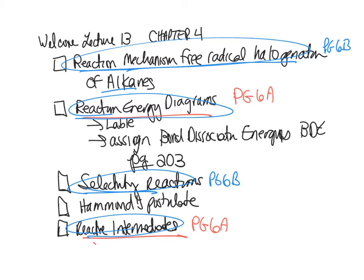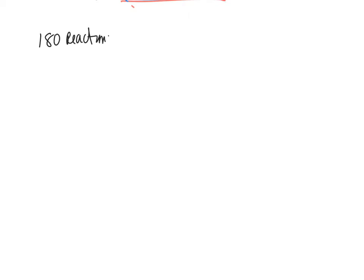If you're planning on taking Organic 2, you're going to be learning about 180 reactions and you'll have to know them all by the time you take your final for Organic 2. That's why it's very important that you learn how to draw Lewis structures — that Pogel 1 activity and Pogel 2 where we talked about resonance structures — and get used to those first two rows of the periodic table: carbon, nitrogen, oxygen, halogen.